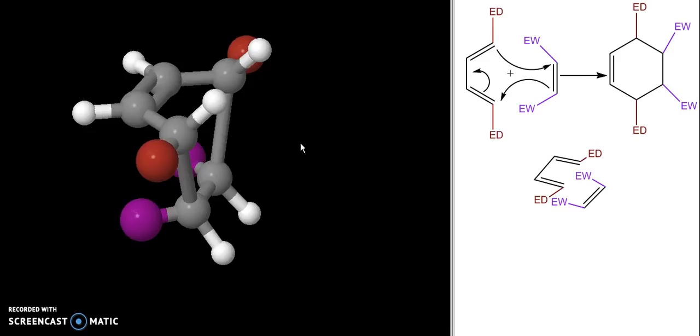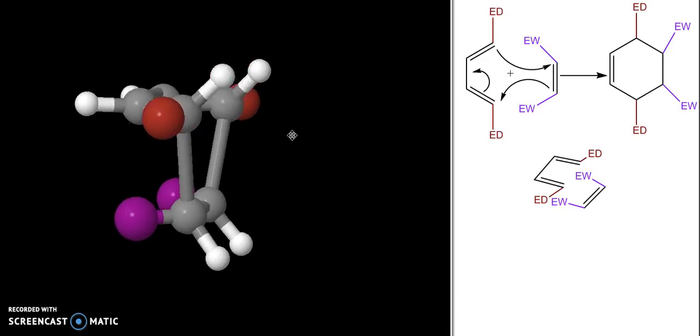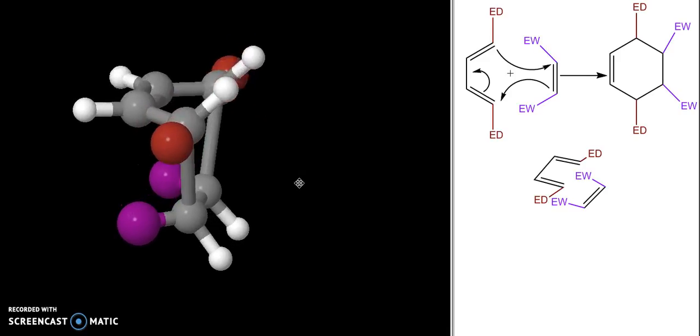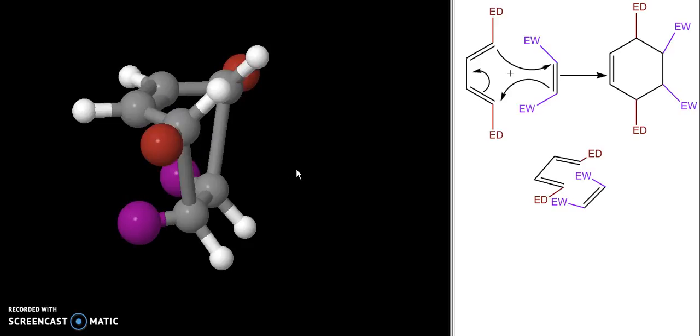You might recognize that this is the boat form of our six-member ring, not the most stable form. We will rearrange this in a minute. But what I want you to notice is that if I rotate this, my electron withdrawing group and my electron donating group are pointing in the same direction.